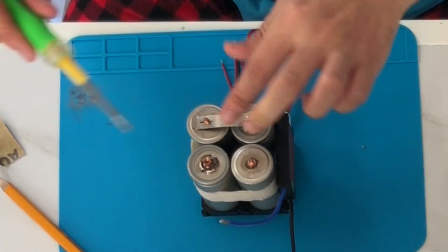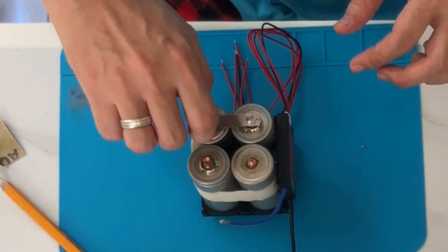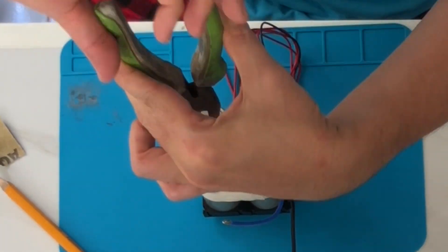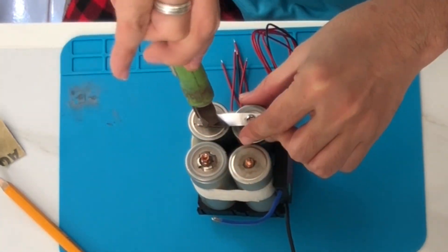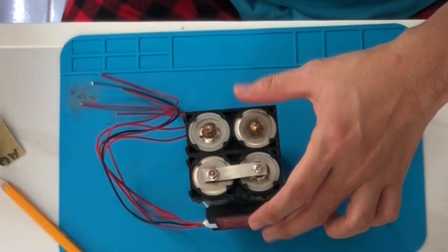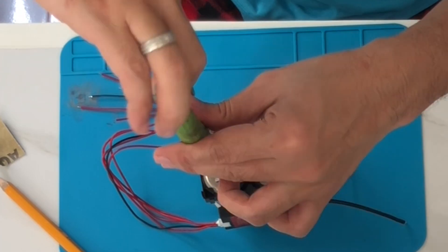We also need a voltmeter and a soldering kit. I bought a kit which already includes these components like soldering lid, a wire stripper, and some other components. I will leave a link in this video so you can check it.